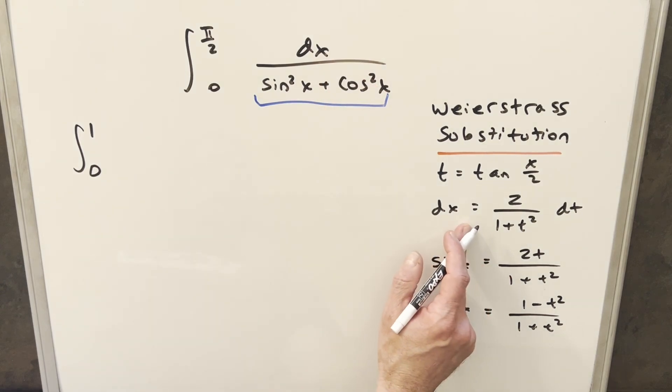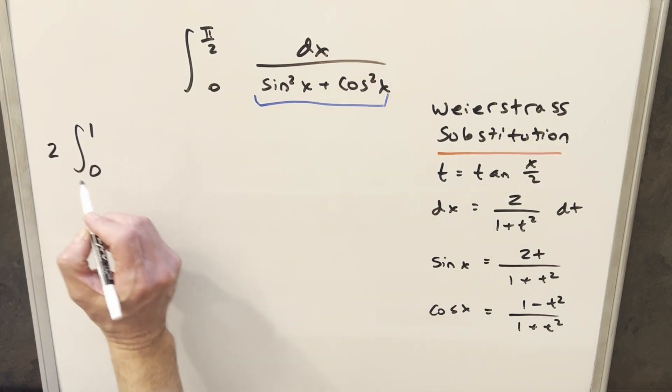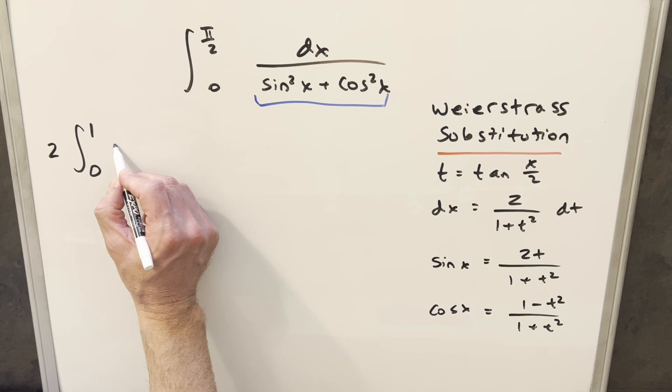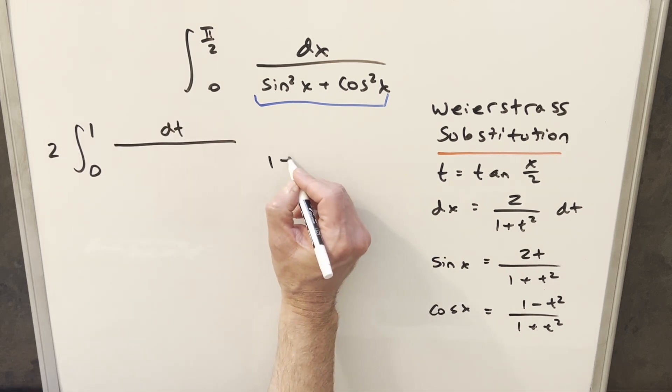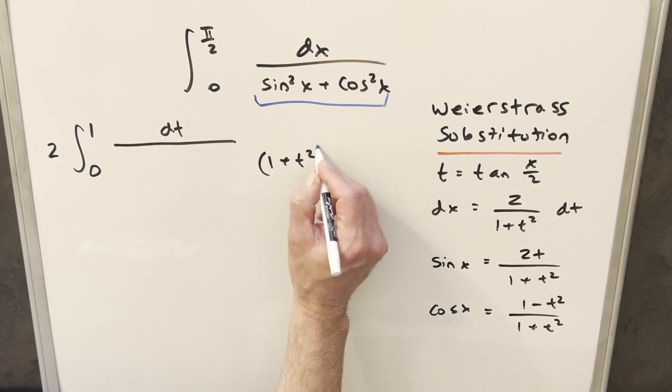So for our dx value, we use this value right here. I'll take my 2 and we'll bring it out front of the integral. And then here, what I'll do, we'll write the whole numerator as dt. But I'll take this 1 plus t² and put it in the denominator, way out here.